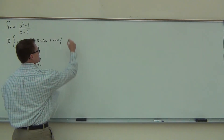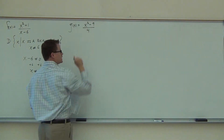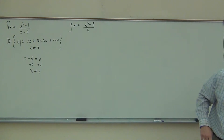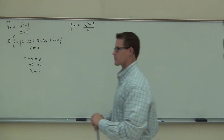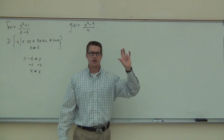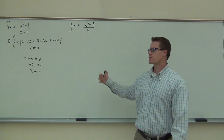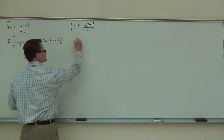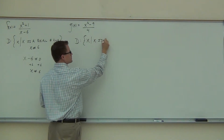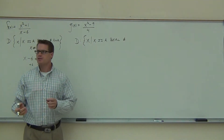Let's practice. We have g(x) = (x² - 9) / 4. Is it okay for the numerator to equal zero? Yes. How about the denominator? No. Is this denominator ever going to equal zero? No. So when we write our domain, we start: the domain is x such that x is a real number. Is it okay if x equals four? How about negative four? If I plug in negative four, is the denominator going to be zero? No. Then I don't care — it's fine.